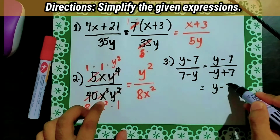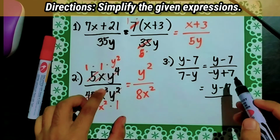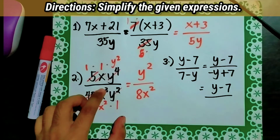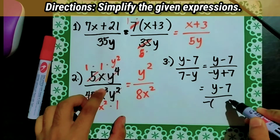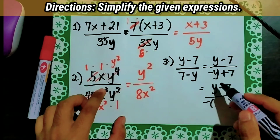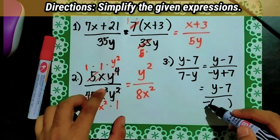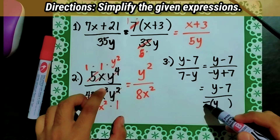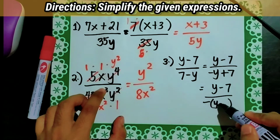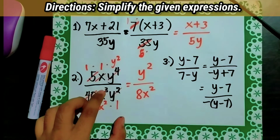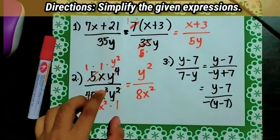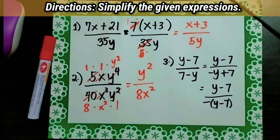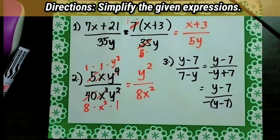So y minus 7 over negative y plus 7 — let's factor out negative 1: negative 1 times the quantity — negative y divided by negative 1 is y, and positive 7 divided by negative 1 is negative 7, or minus 7. So our expression is now y minus 7 over negative 1 times the quantity y minus 7. Now let's divide out the common binomial y minus 7.